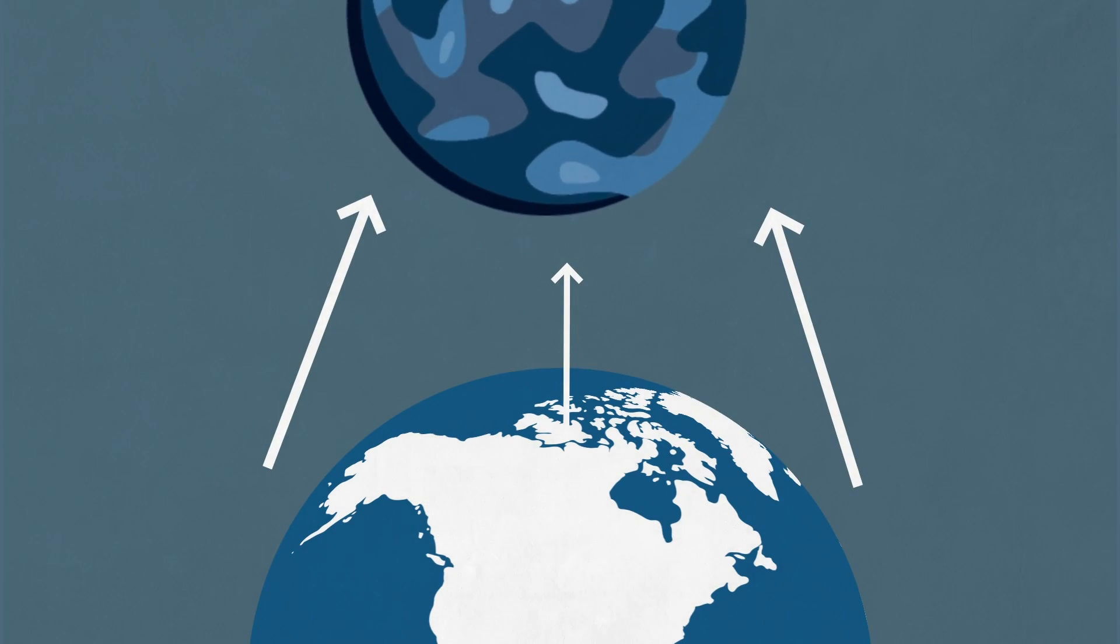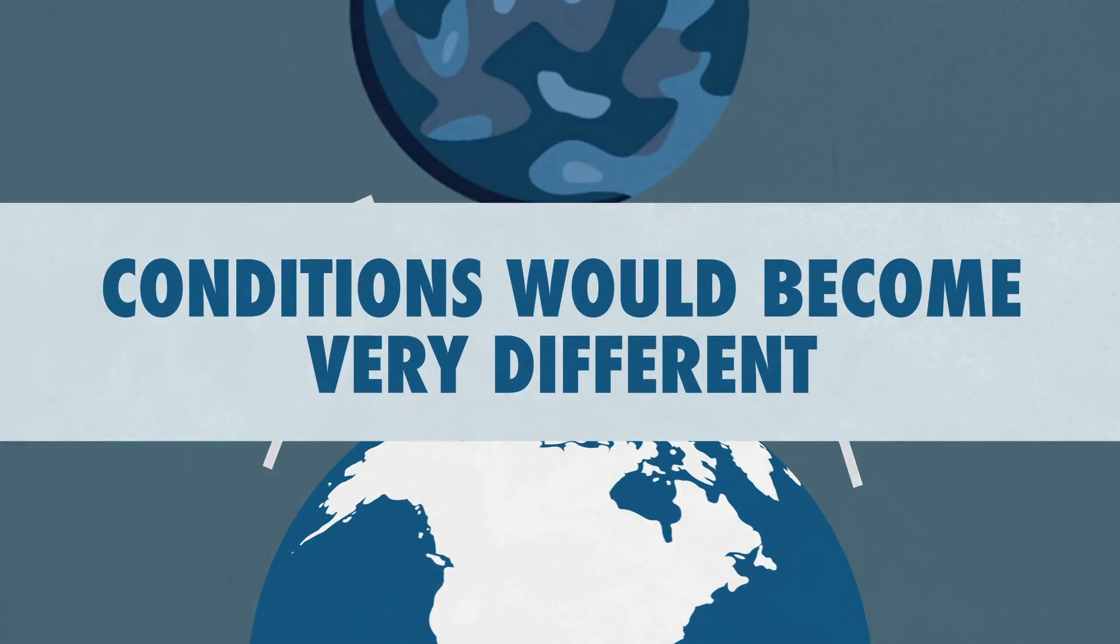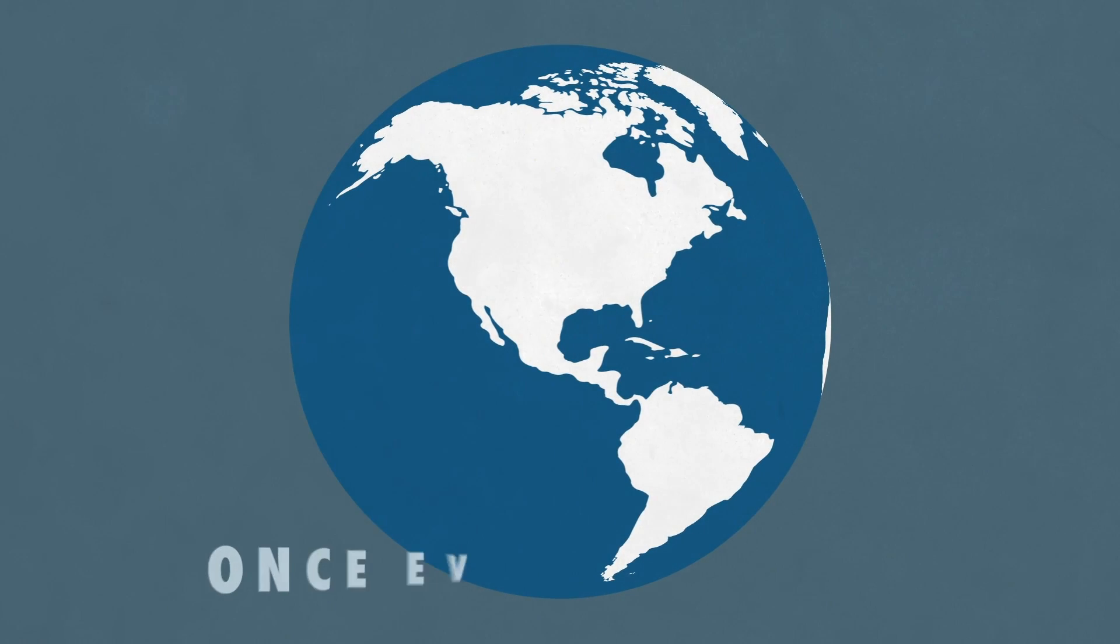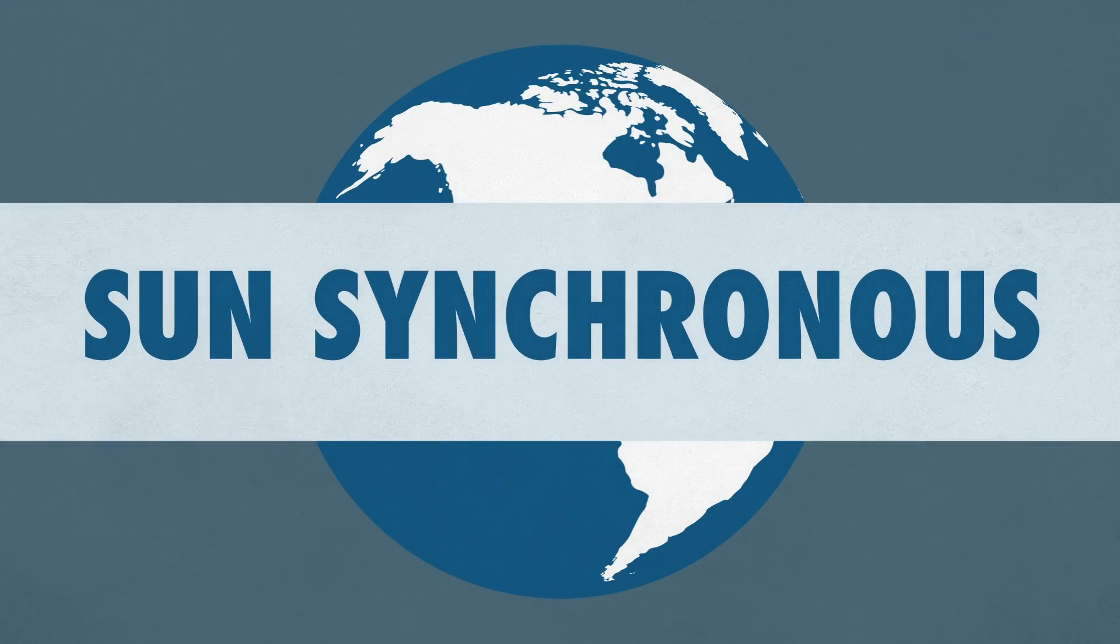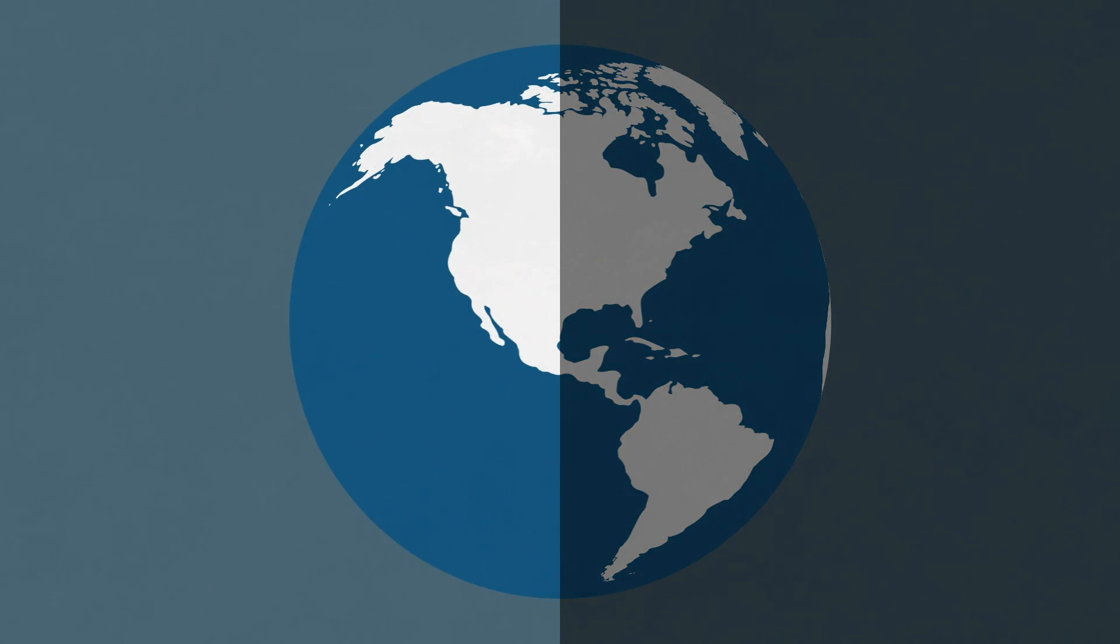While buildings would remain standing, conditions would become very different. If Earth slowed down to the point where it rotated once every 365 days, it would become what is known as sun-synchronous. This would mean that one side of the planet would be constantly facing the sun, and the other side would be constantly facing away from it.